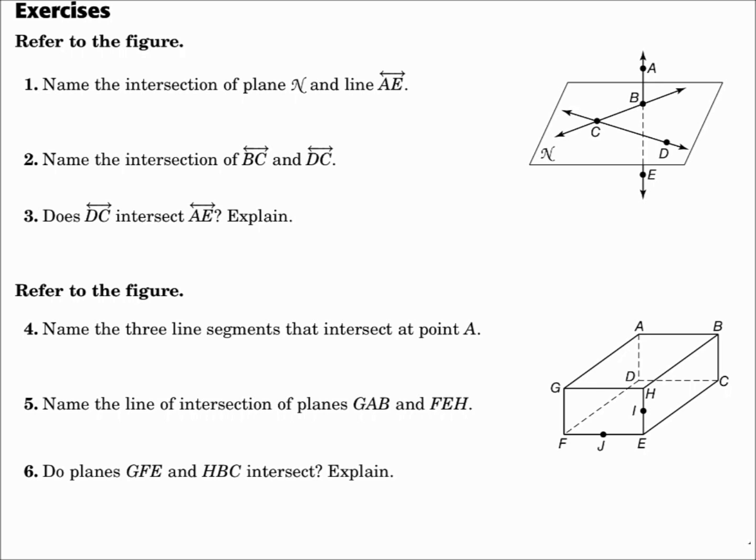Number two. Name the intersection of line BC and line DC. Line BC and line DC intersect right there at point C.